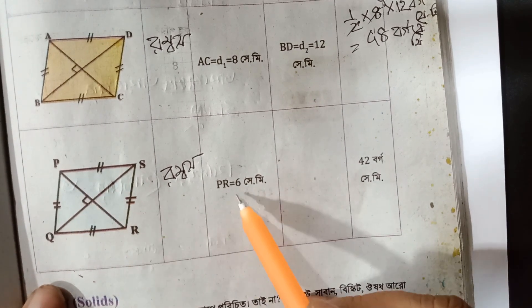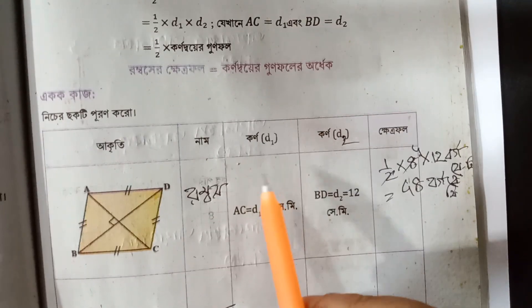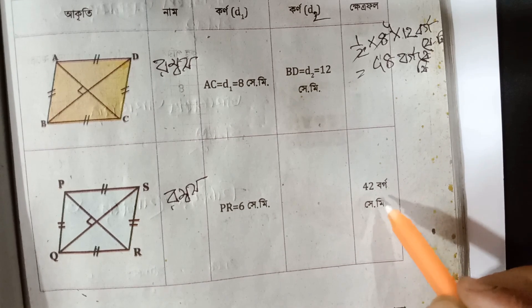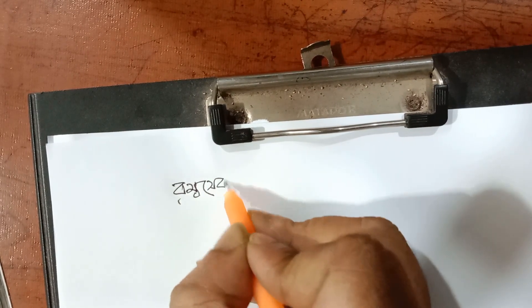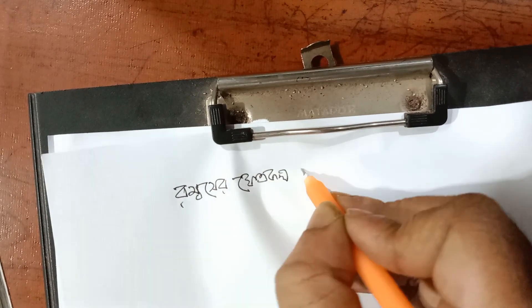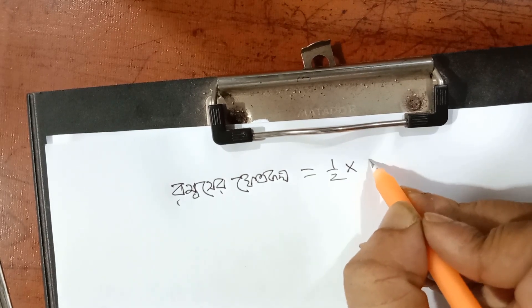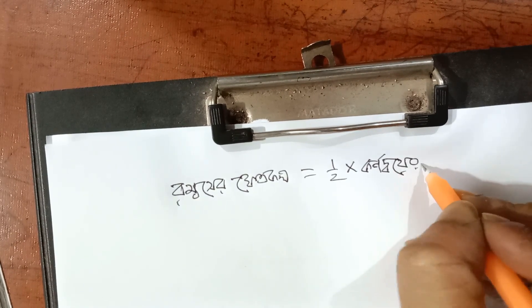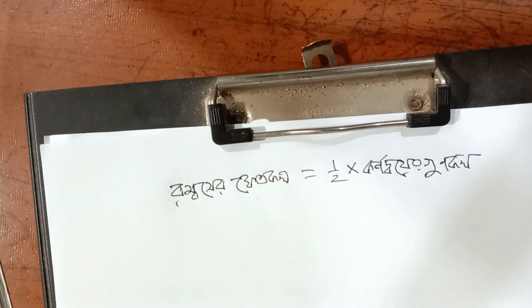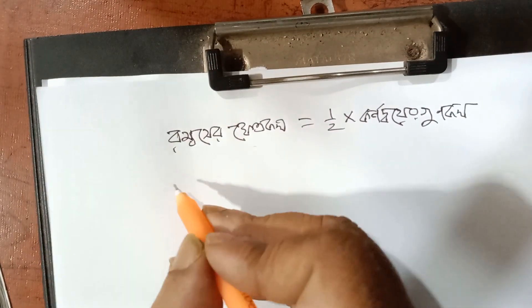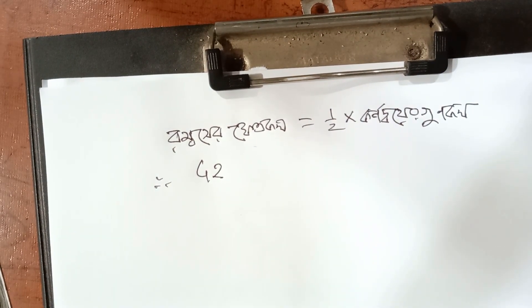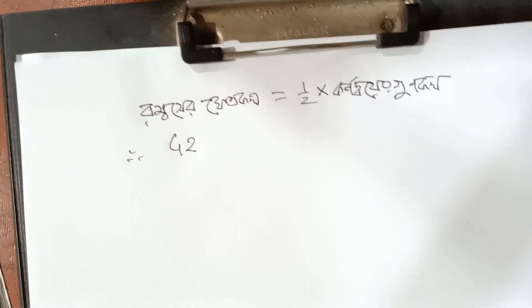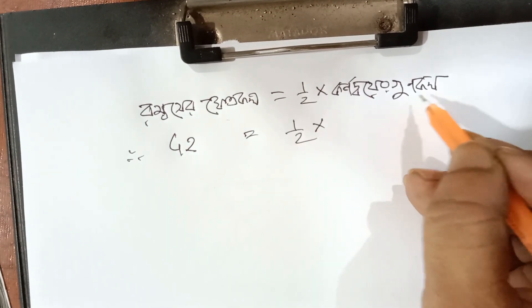એ diagonal-ની માં 6 cm. એ formula: 1 plus half into 2 — આ rule અનુસાર area ગણવા.